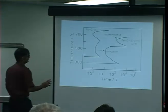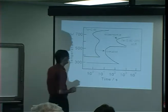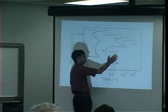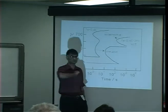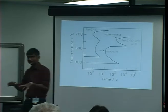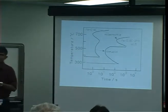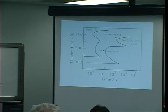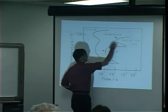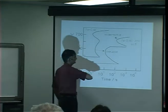We can divide the time-temperature transformation into two regimes: one for displacive transformations, one for reconstructive. In a reconstructive transformation you basically take your crystal, break all the bonds, and rearrange the atoms in a way which minimizes strain energy — that requires mass flow, so diffusion. These transformations do not happen at low temperatures because there simply isn't enough diffusion.